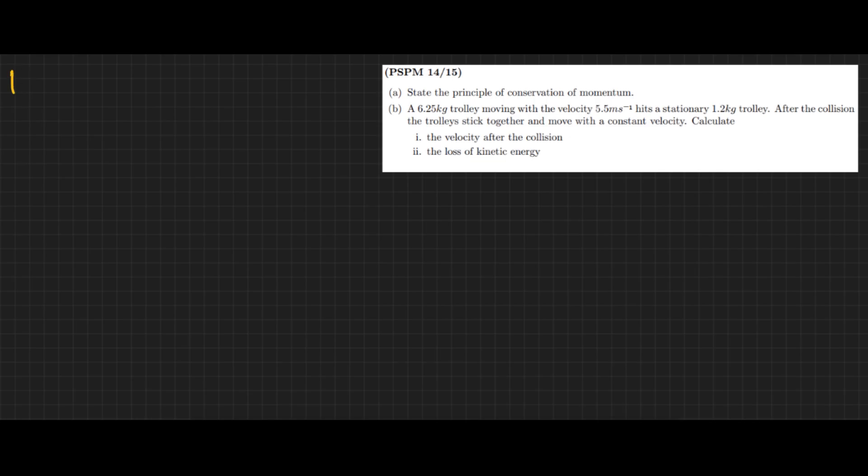Part (b): A 6.25 kilogram trolley moving with velocity 5.5 meters per second hits a stationary 1.2 kilogram trolley. After the collision the trolleys stick together and move with a constant velocity. Calculate the velocity after the collision and the loss of kinetic energy.